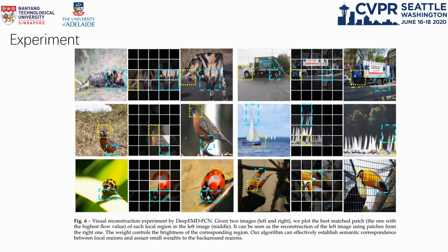We use the weight to control the brightness of the corresponding regions. Our algorithm can effectively establish semantic correspondence between local regions, and assign small weights to the background.